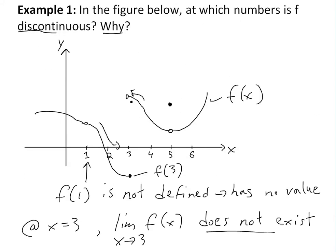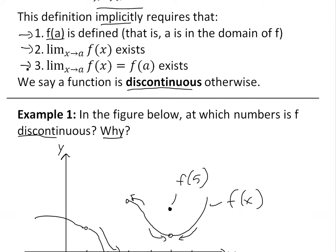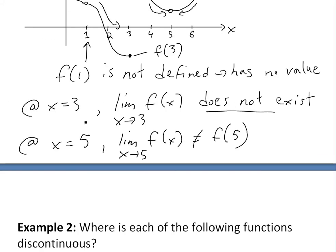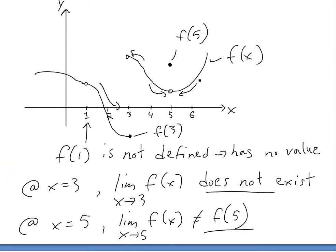Continuing past x=3, the graph is continuous. Then at x=5 there's another jump — the limit exists and f(5) is defined, but f(5) and the limit don't equal each other, which violates requirement three. So at x=5, the limit as x approaches 5 of f(x) is not equal to f(5), thus it's not continuous. Past x=5, the function is continuous everywhere.